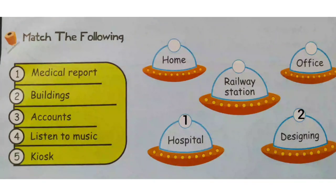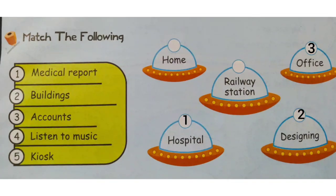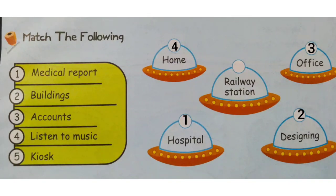Third one is accounts. We can match accounts with the word office, so you write three there. Next is listen to music — we sit in our home and watch movies, listen to music, etc. with the help of a computer, so you can match listen to music and write four there. And the last one is kiosk. Kiosk is an outlet used at the railway station, so you can match kiosk with railway station. Write five there in that circle.